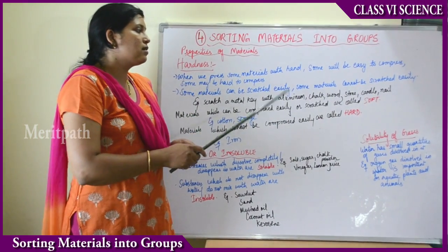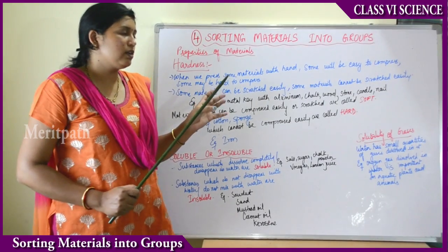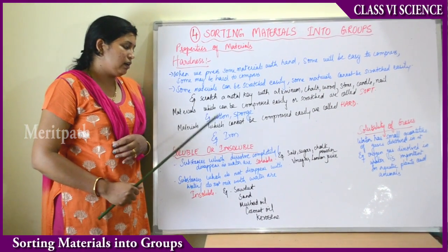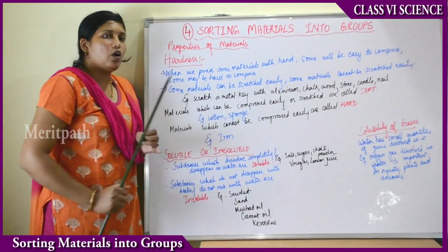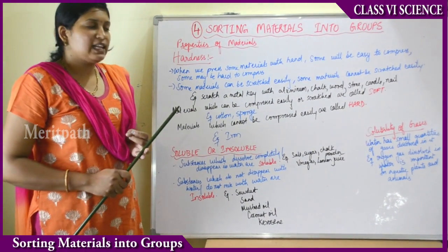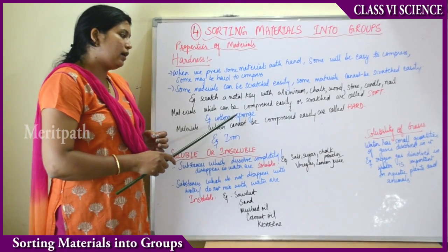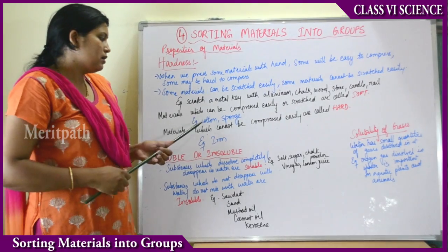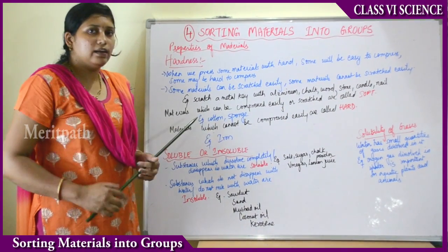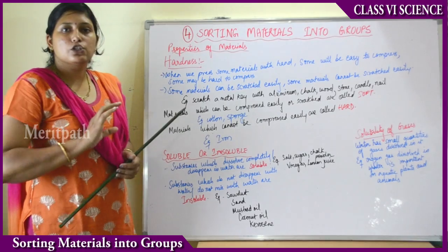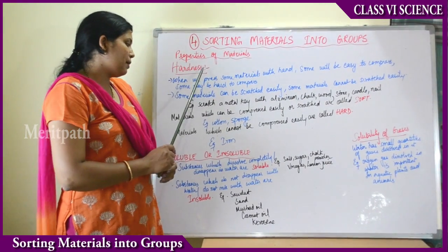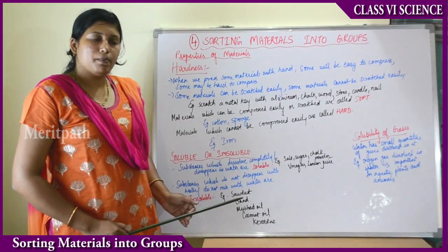Soft and hard are hardness characteristics of a material. Materials which can be compressed or scratched easily are soft — examples are cotton and sponge. Materials which cannot be compressed or scratched easily are hard — example is iron. Even if you press iron hard, you cannot change its shape, and iron cannot be scratched easily. It is very hard in consistency.